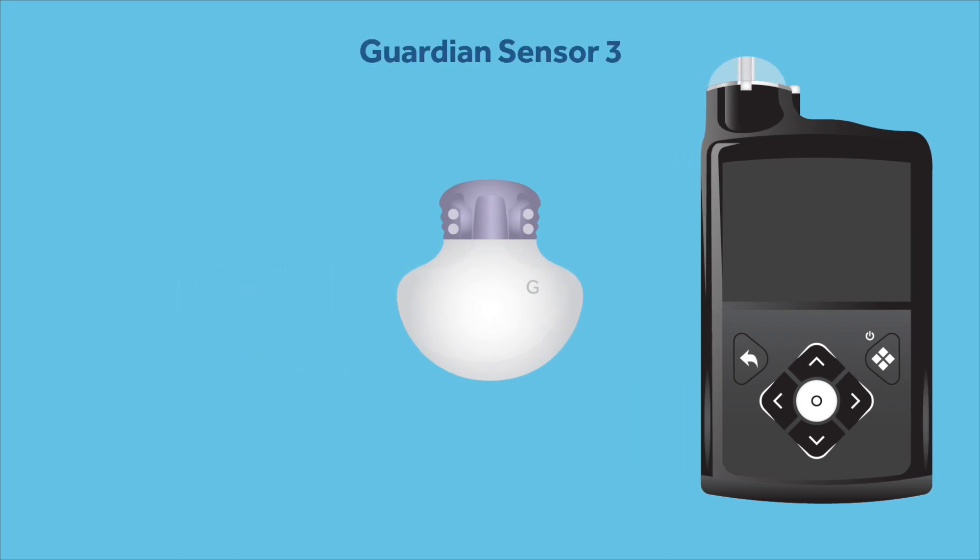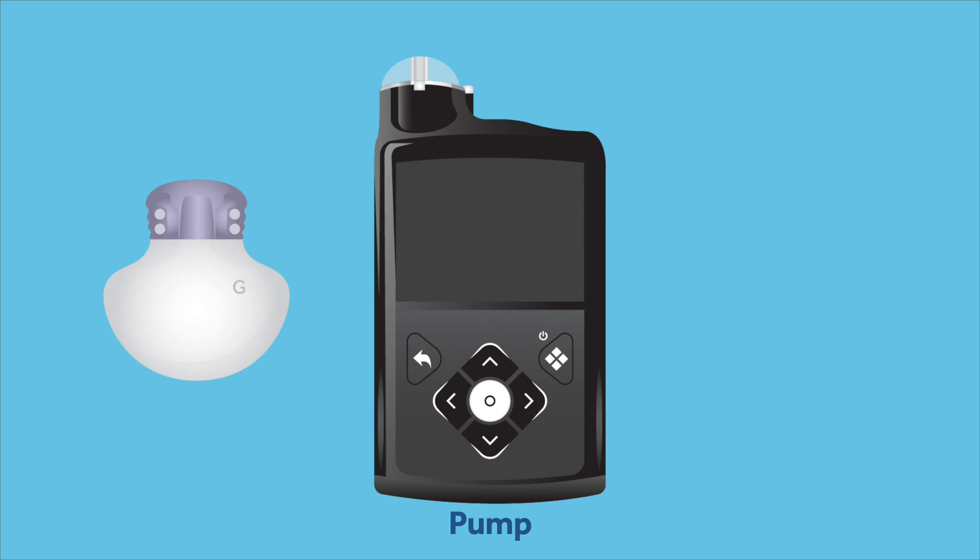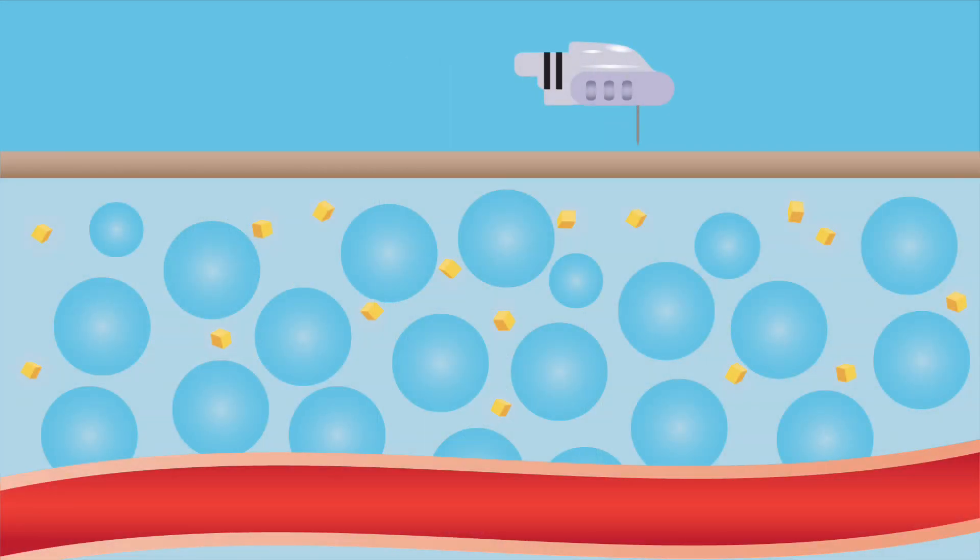The Guardian Sensor 3, the Guardian Link 3 transmitter, and the Minimed 770G insulin pump. The sensor is inserted into the skin so it comes into contact with the fluid beneath the skin. The transmitter is then connected to the sensor. Every five minutes, the sensor measures the glucose found in the fluid under the skin and sends that information through the transmitter to the pump. The glucose value then appears on Lisa's pump.